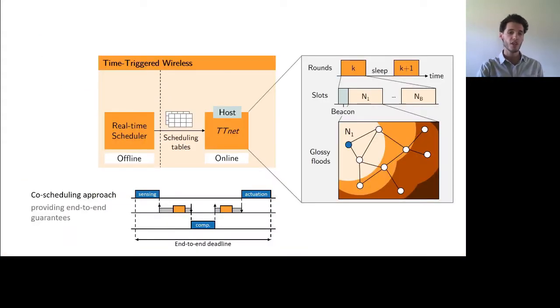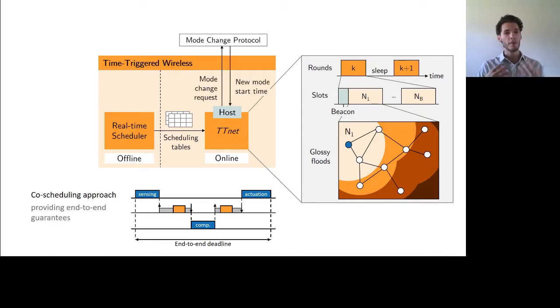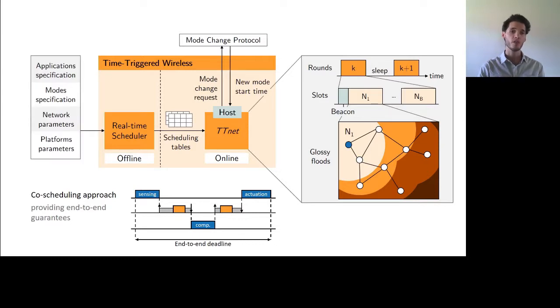So to summarize on the scheduling part, the key idea is that we use a static co-scheduling approach to provide end-to-end guarantees at the application level. To maintain a certain level of adaptability, we support mode change at runtime of the entire system. And to compute the scheduling table, the scheduler actually requires a certain number of parameters, as well as a model of the TTNet implementation.